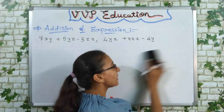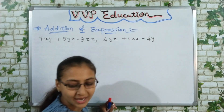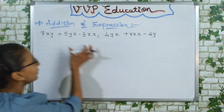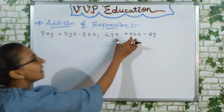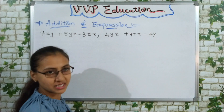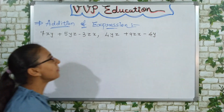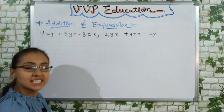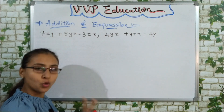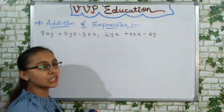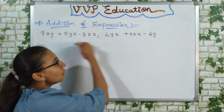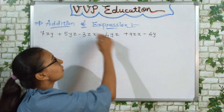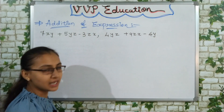Now when we have a combination of like and unlike terms in expressions, there are two methods through which we can add two or more expressions.